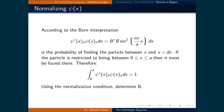Our solution to the particle-in-a-box problem is still incomplete. We still do not have a complete solution for psi. There is still a constant in front of the sine function which is still undefined — this is the constant b.